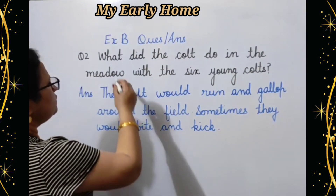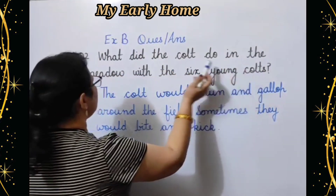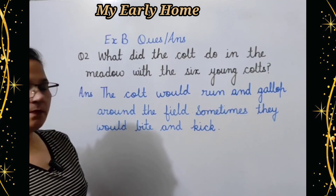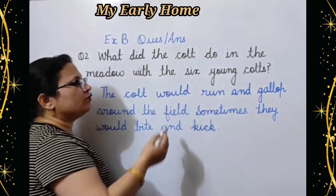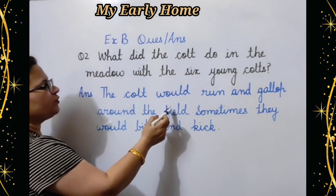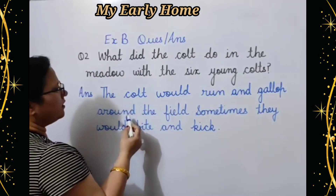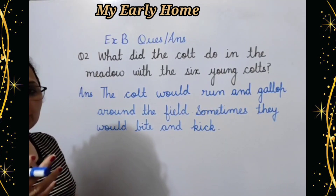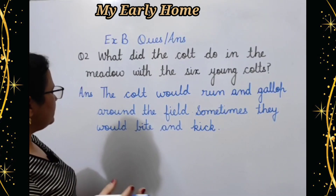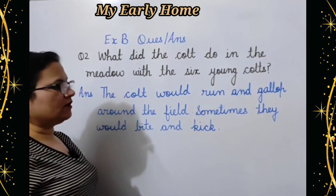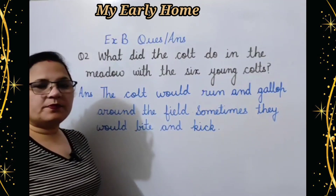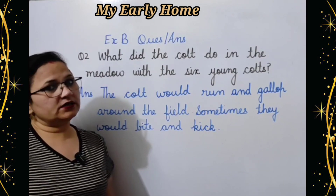Question number two: What did the colt do in the meadow with the six young colts? Colt meadow ghaas ke maidan mein chhe young colts ke saath kya karta tha? Answer: The colt would run and gallop around the field. Colt zhor zhor se bhaagta tha kheton ke kinaare. Sometimes they would bite and kick.